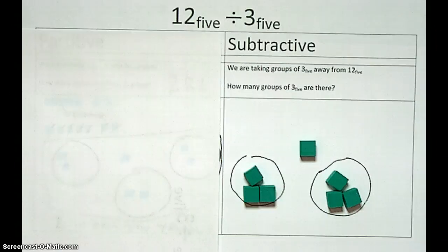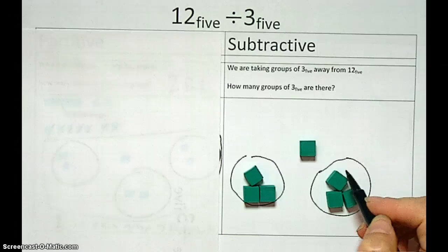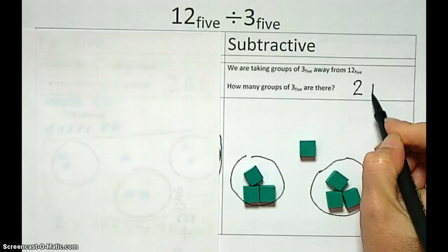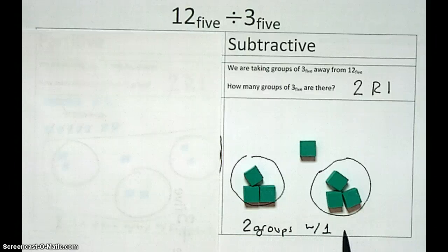Okay. So again, this is, the answer is the same. It's 2, 2 groups with a remainder of 1. So 2 groups with 1 remaining.